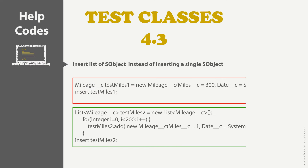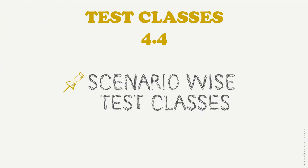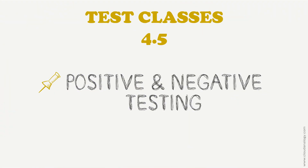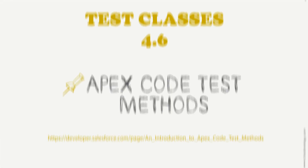The third point is bulk testing — bulk testing should always be done for objects having triggers. The fourth point is business and scenario-based test classes — the purpose of writing test classes is to test the business logic being executed correctly by your code without any failures; there could be several test functions in a class to test all the user scenarios end-to-end. The fifth point is positive and negative testing — make calls to methods using both valid and invalid inputs. The last point is Apex code test methods — by using this link you can follow the guidelines defined by Salesforce itself.